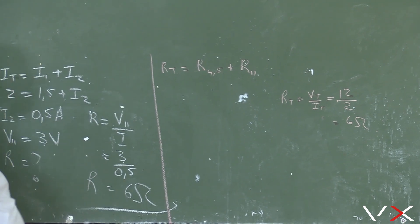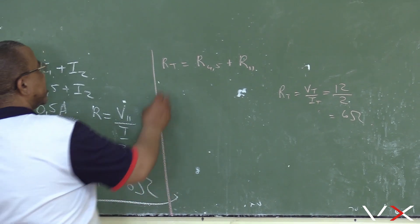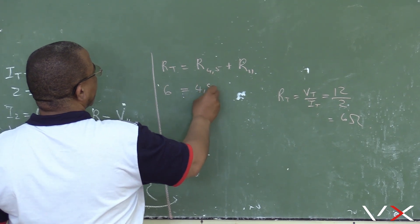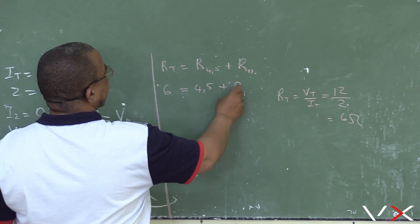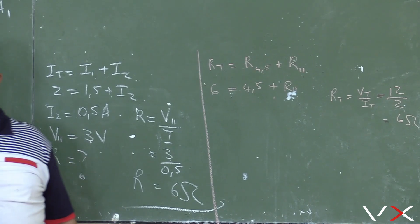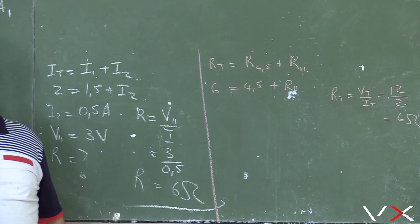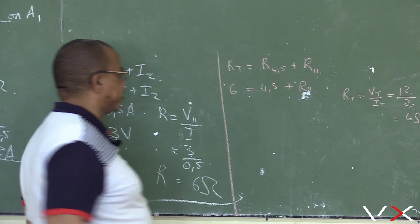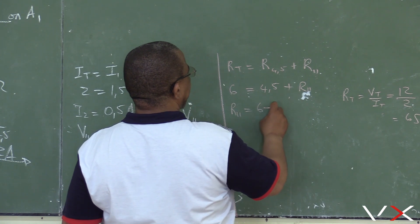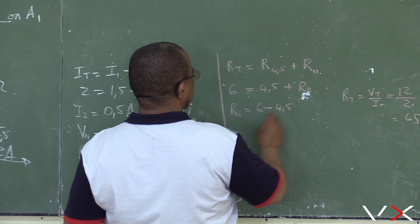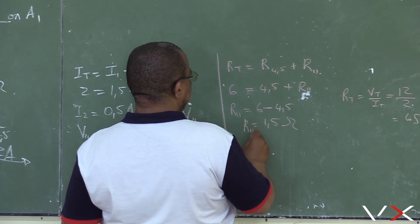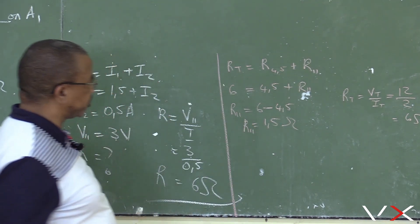R total is 6 ohms. With R1 equal to 4.5 ohms, R parallel equals R total minus 4.5, which is 6 minus 4.5, giving R parallel equals 1.5 ohms.